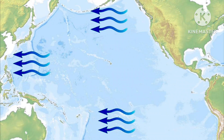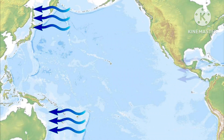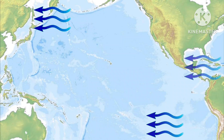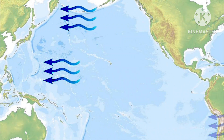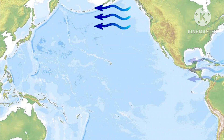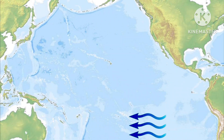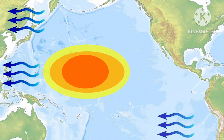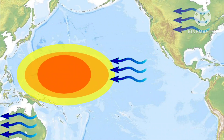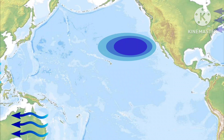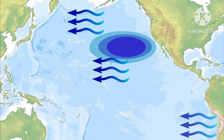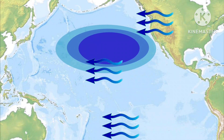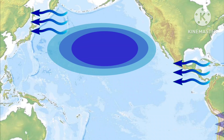La Niña has the opposite effect of El Niño. During La Niña, trade winds blow from east to west but are stronger than usual, pushing more warm water towards Asia. Off the west coast of America, upwelling increases, bringing cold, nutrient-rich water to the surface.